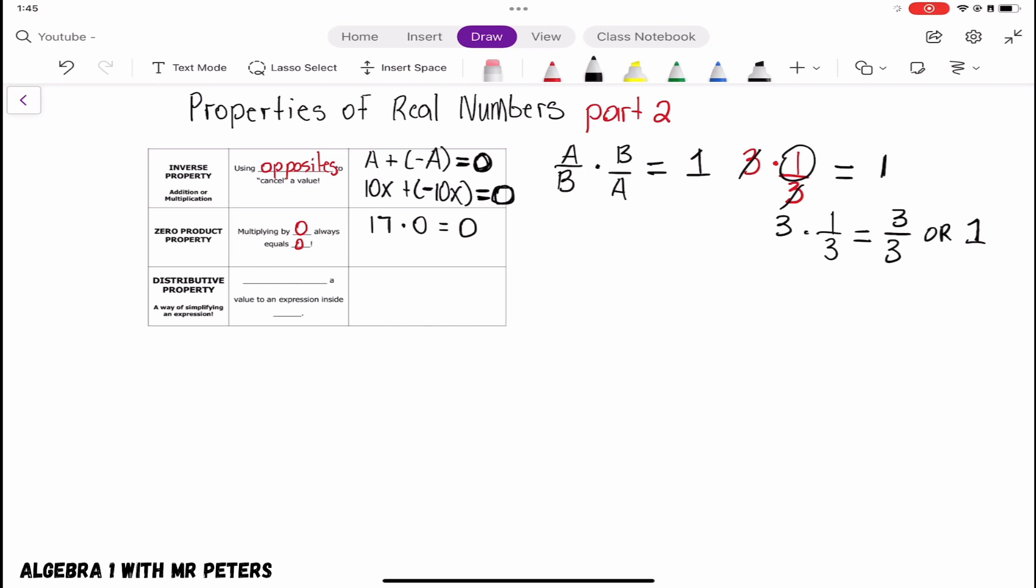And then once we do the same thing where let's say a variable negative A multiply by zero, we're still going to get the same answer of zero. So when it comes to zero product property, just remember anything that you multiply by zero will always equal zero.